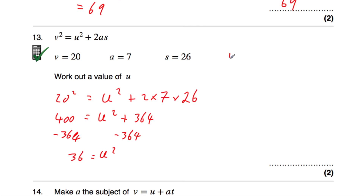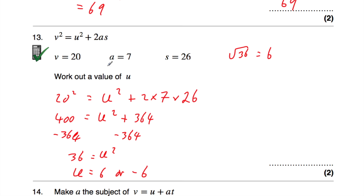The square root of 36 is 6, so u equals 6 or negative 6, because negative 6 times negative 6 is also 36. The question asks to work out a value of u, so u equals 6 or negative 6.